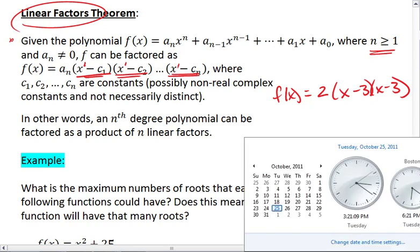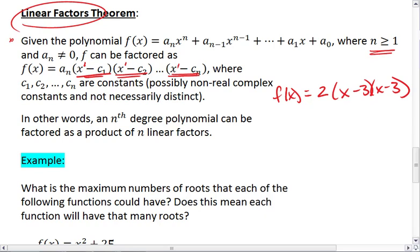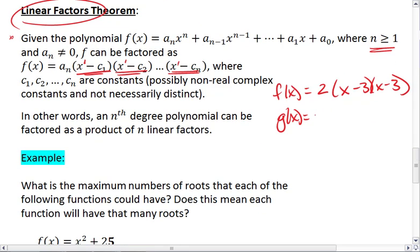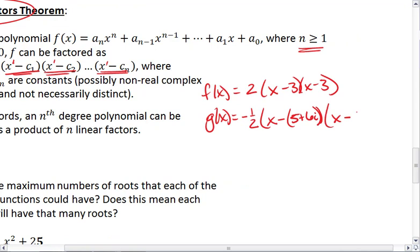Or we could have g of x, which could equal maybe negative 1 half times x minus, and we'll pick a complex number. How about 2 plus 3i? And we'll change the numbers up a little bit. 5 plus 6i times x minus 5 minus 6i. So in that case, we have two non-real complex numbers.